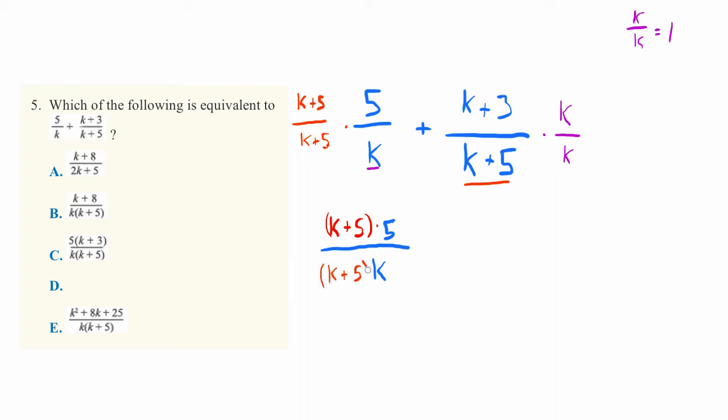And pretty much the exact same simple thing over here on the other equation. We have k plus 3 and that whole quantity times k because we multiplied by those. And then that whole thing is divided by k plus 5 times k. K plus 5 times k.